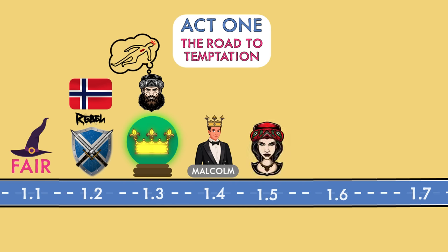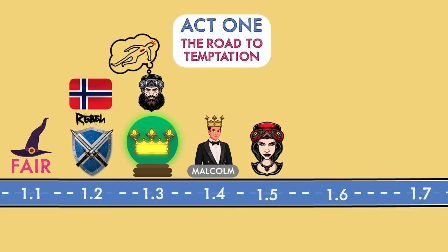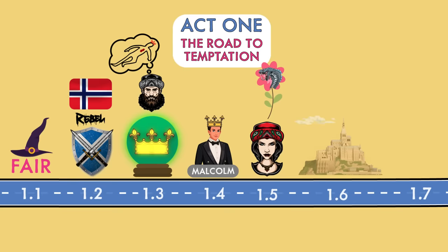Meanwhile, Lady Macbeth has heard of the witches' prophecies in a letter from Macbeth. When she then learns that King Duncan is coming to stay at their home in Inverness Castle, she calls on evil spirits to fill her full of cruelty so that she can help murder the king. She also says Macbeth must deceive everyone by pretending to be friendly — he should look like a flower, nice and harmless, but be the serpent under it. And the very next thing we see is Duncan arriving at Inverness Castle, saying how pleasant it is, and being greeted warmly by Lady Macbeth. Little does he know she's planning to murder him.